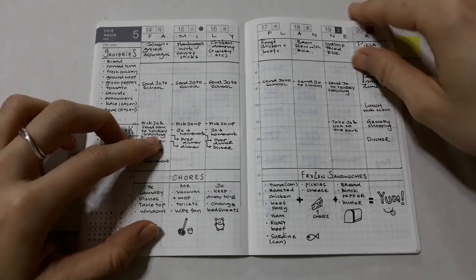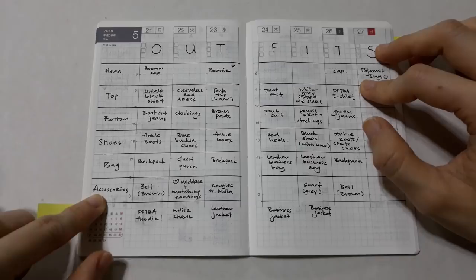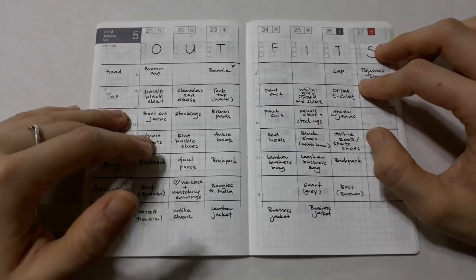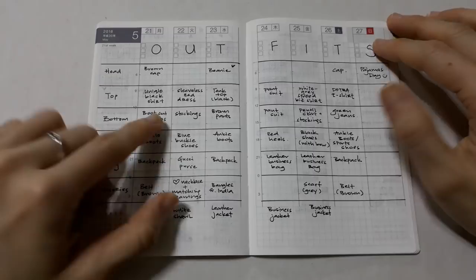This outfit planner would be useful for people who don't like repeating their outfits. Each row represents one item such as shoes, bags, accessories, and so on, and then you simply fill in every day your outfit for that day. One problem I've had with this spread is that unless the item is really unique, I have to be specific with the description of the item, else I might wonder which black shirt I'm referring to.